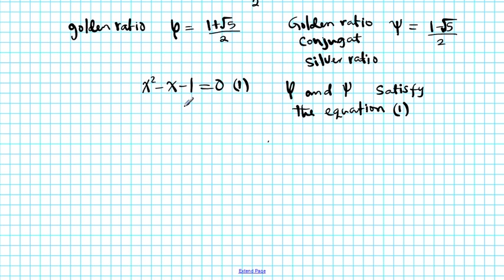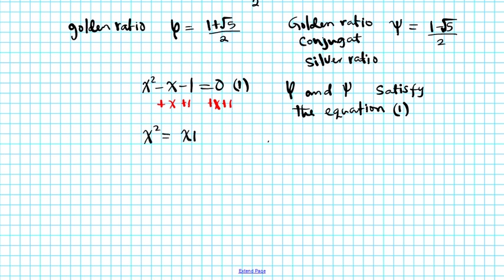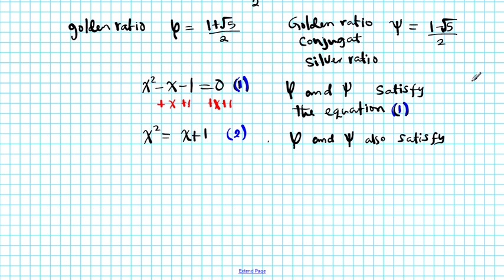Now, what if I do some algebra here? If I add x and add 1 to both sides, I simply transform this equation by isolating x squared, giving x squared equals x plus 1. Let's call this equation 2. These two equations are equivalent, so since the golden ratio and the silver ratio both satisfy equation 1, they also satisfy this formulation — equation 2.